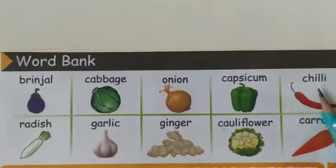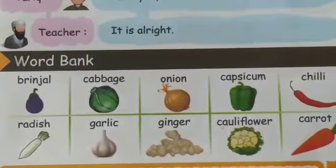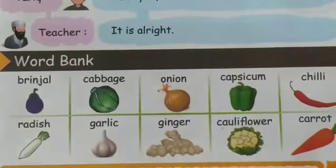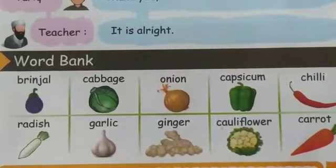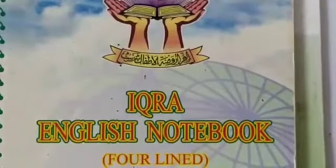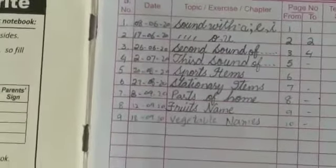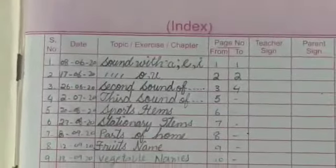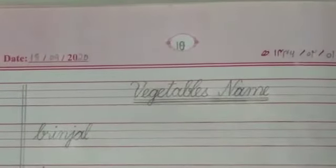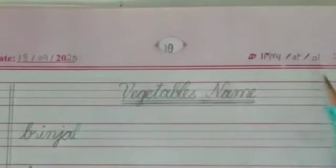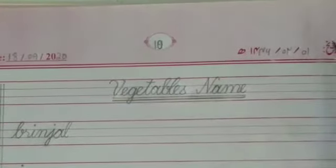And this is Ginger. Next we have Cauliflower. And the last one is Carrot. Okay students, you have to repeat these names time and again and don't forget to learn them by heart. These are very important and this question may come in your exams. You have to learn all the spellings.